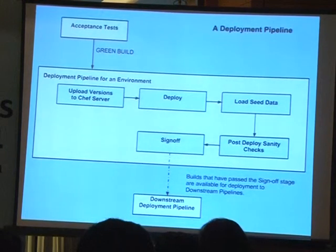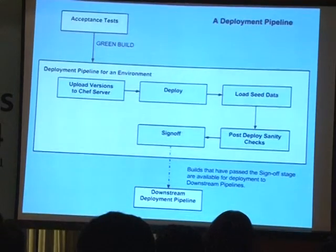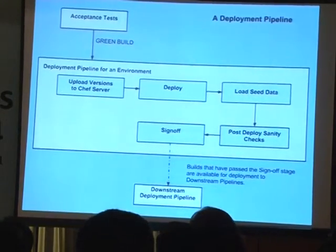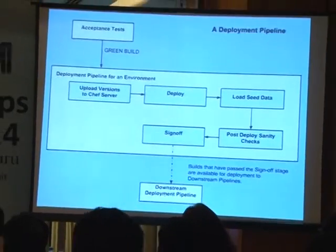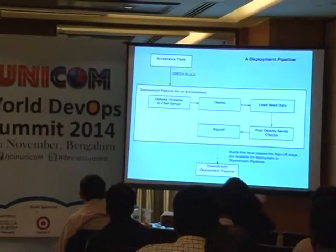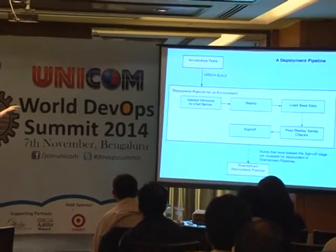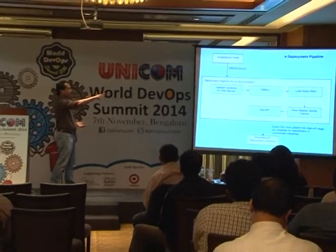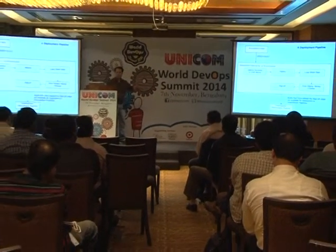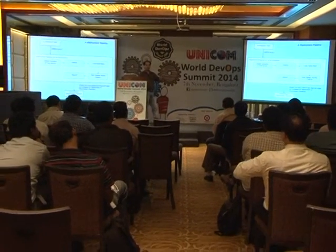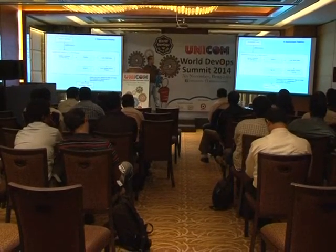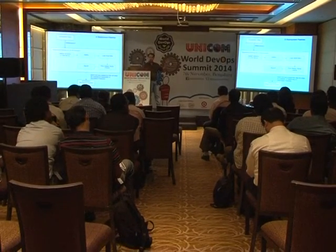I want to talk about deployment pipelines. What you see is a deployment pipeline triggered by acceptance tests. These are the various stages - all different stages in the pipeline. The first stage is basically uploading the versions to Chef Server. I need to figure out what version of the RPM or package to deploy to my environment, so I need to tell Chef Server about it.